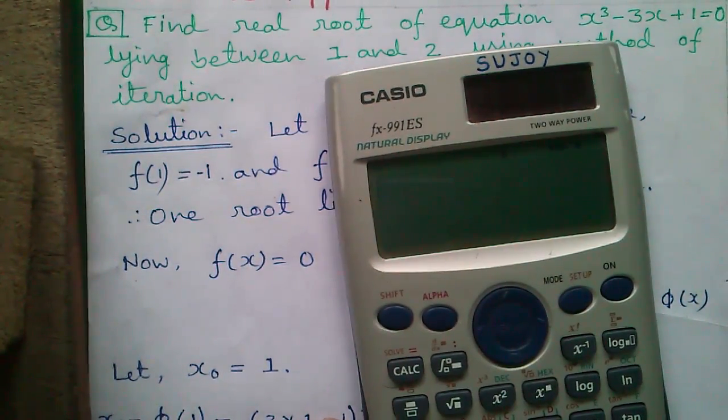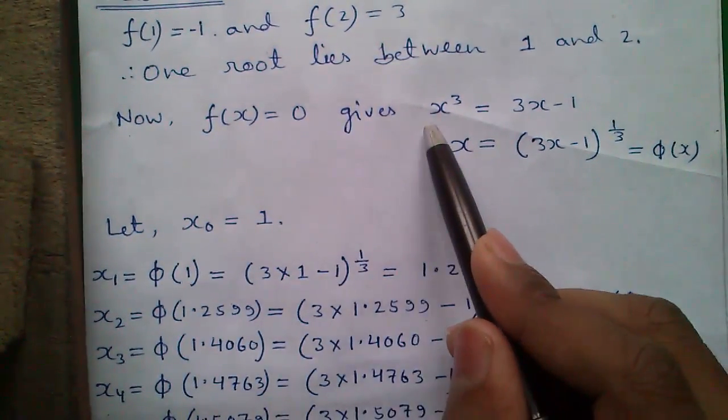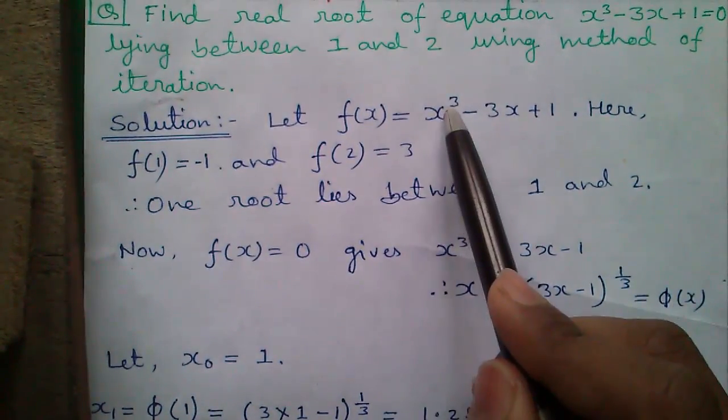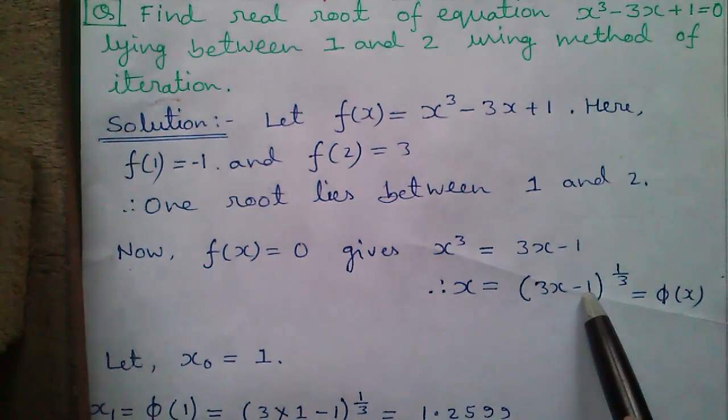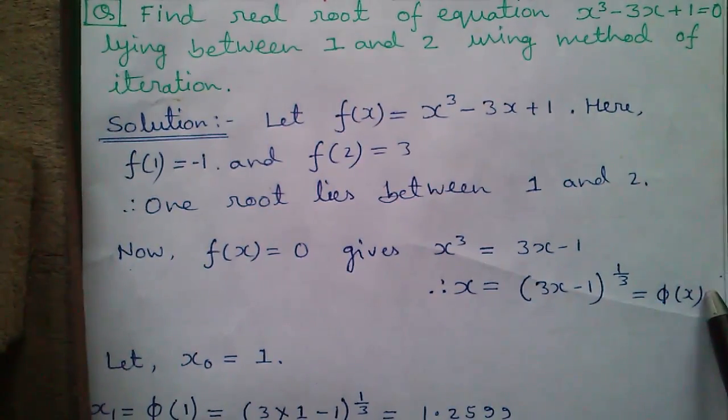You can get that video on my channel. So for now, f(x) = 0 gives x³ = 3x - 1 by moving them to the right-hand side. And x becomes (3x - 1)^(1/3), which is our φ(x).